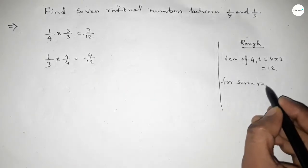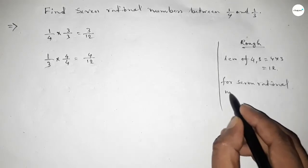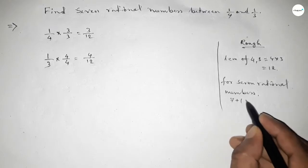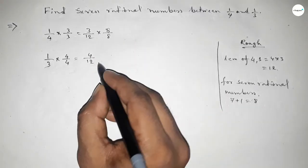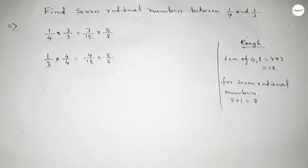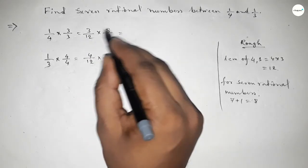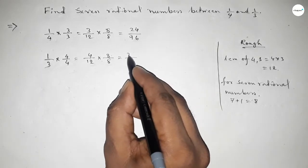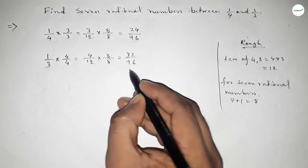Now for finding 7 rational numbers between any two numbers, we have to follow this method. We should multiply by 7 plus 1 equal to 8 in this way. So this is 24 over 96 and this is 32 over 96.